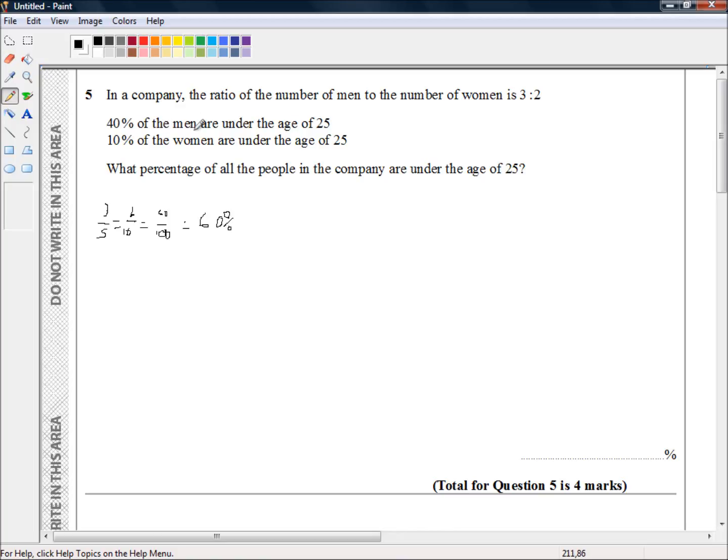We know that 40% of the men are under the age of 25, so 40% of 60% are under-25 males. We translate 'of' to mean 'multiplied by'. So 40% times 60% equals 40/100 times 60/100, and we can cancel the zeros...